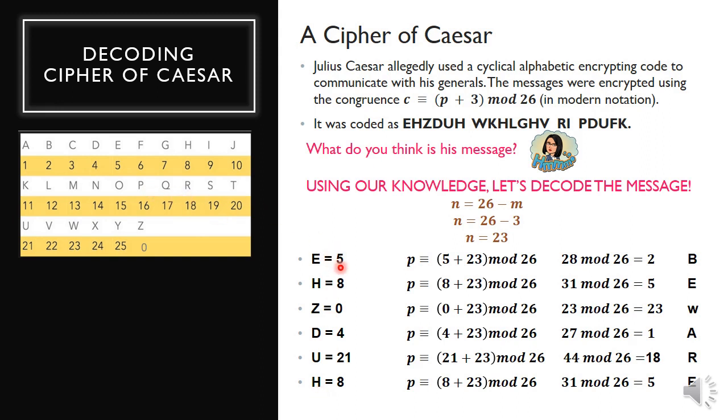Next, we solve the modular arithmetic. 5 plus 23 mod 26, where 5 is from the ciphertext and 23 is from N. This equals 28 mod 26, which equals 2 with remainder 2. Then we have 8 plus 23 for letter H, which is 31 mod 26, so the remainder is 5. Then 0 plus 23 mod 26 is 23 mod 26, which is 23 since there's no excess. 4 plus 23 mod 26 is 27 mod 26, which equals 1.